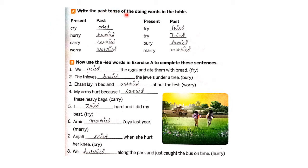Now write the past tense of the doing words in the table. Present tense forms are given and we have to write the past tense. 'Cry' becomes 'cried,' 'hurry' becomes 'hurried,' 'carry' becomes 'carried,' 'worry' becomes 'worried.' For the next set: 'fry' becomes 'fried,' 'try' becomes 'tried,' 'bury' becomes 'buried,' 'marry' becomes 'married.'